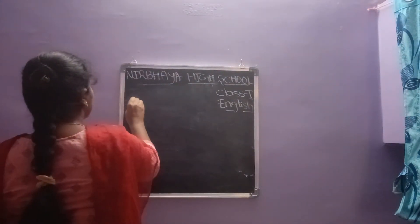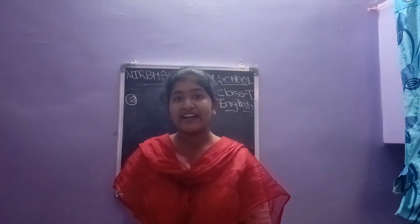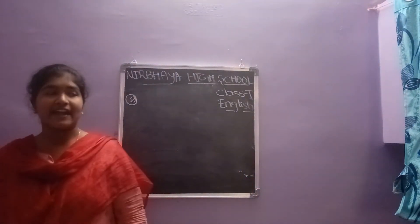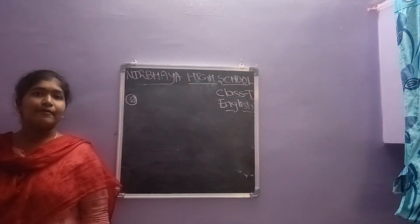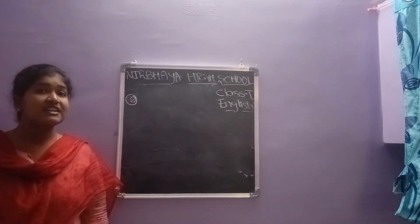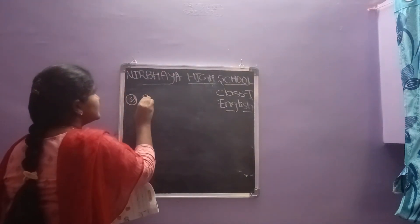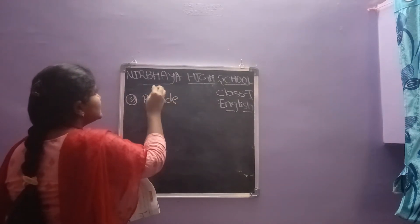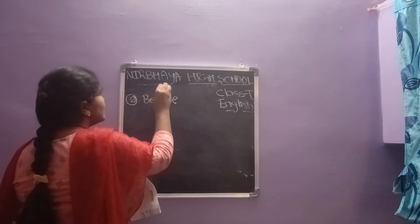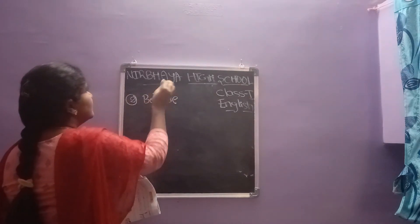Next, second one: Sumit is standing beside Anjali. I am standing beside the blackboard. What is the position word, children? Beside. Beside is the position word. So draw the star on 'beside' — B-E-S-I-D-E.